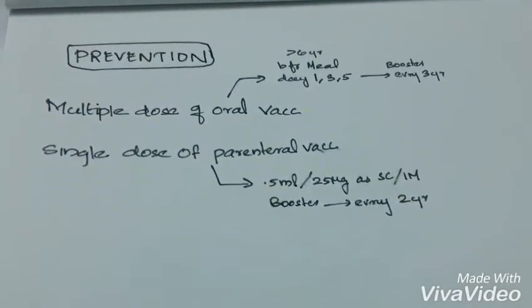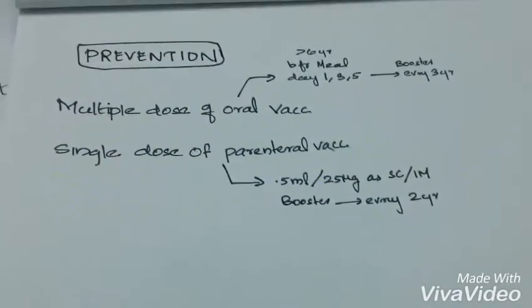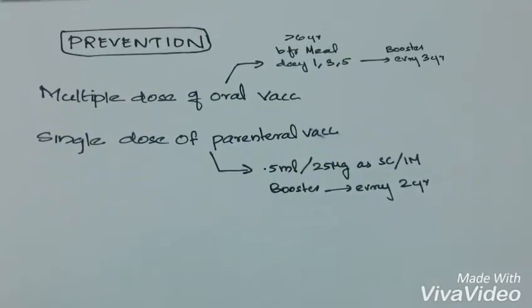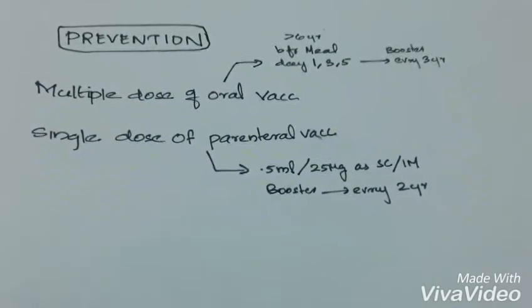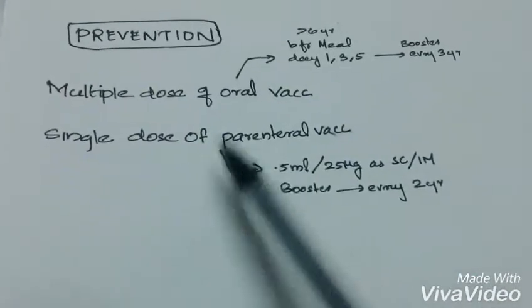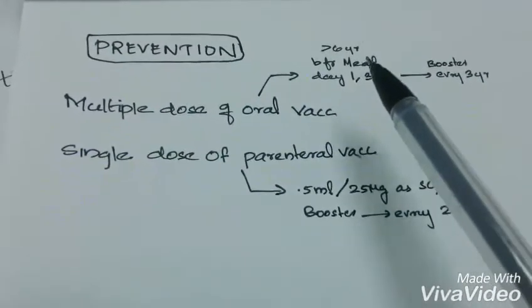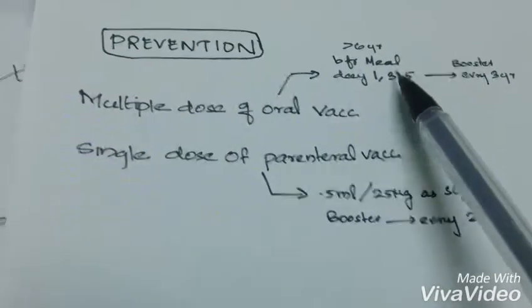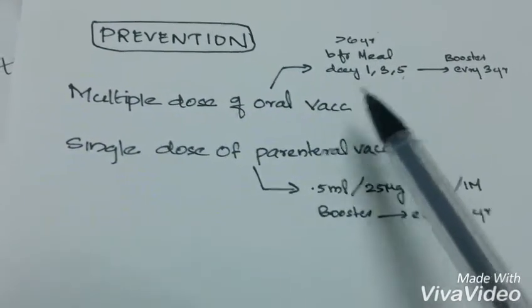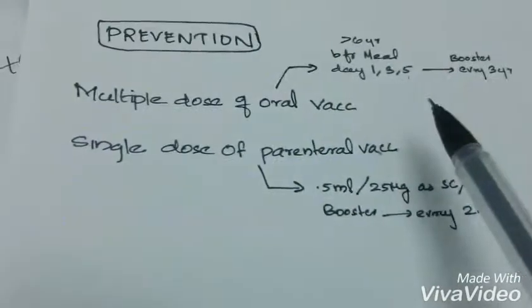Prevention can be done by vaccination. There are two options: multiple dose of oral vaccination and single dose of parenteral vaccination. Multiple dose of vaccination is usually taken in people more than 6 years before meals, with dosing on day 1, 3, and 5, and booster dose is taken every 3 years.